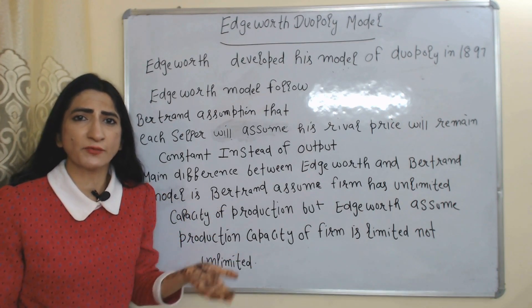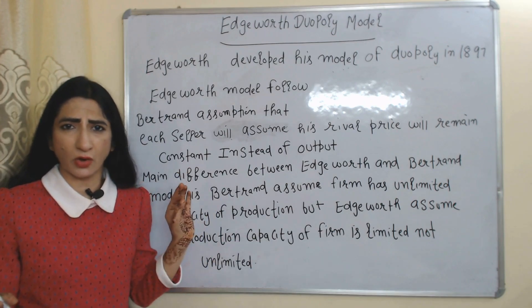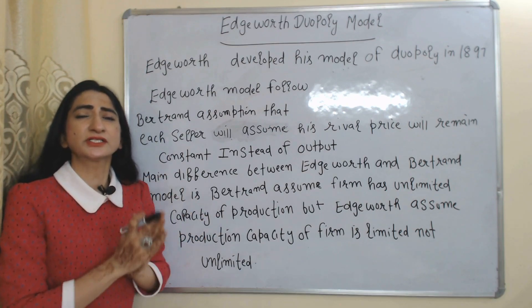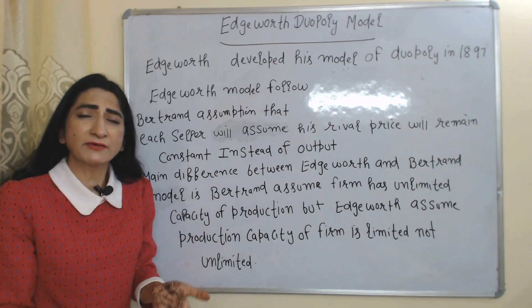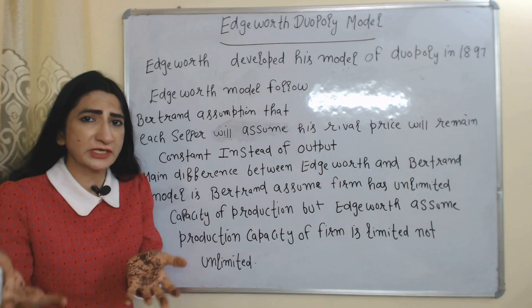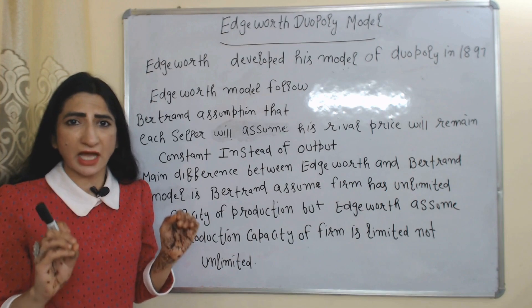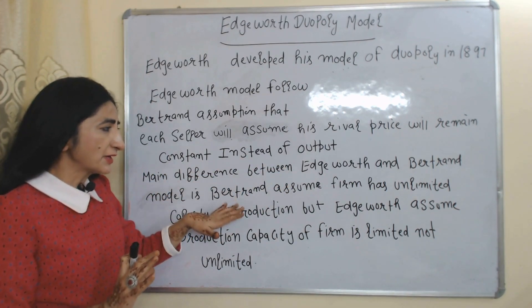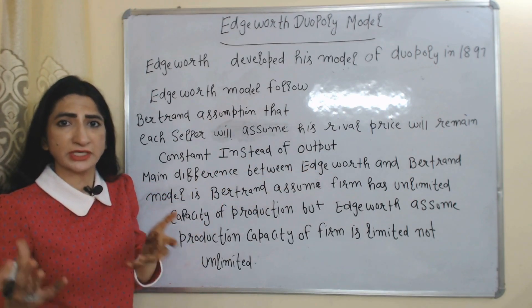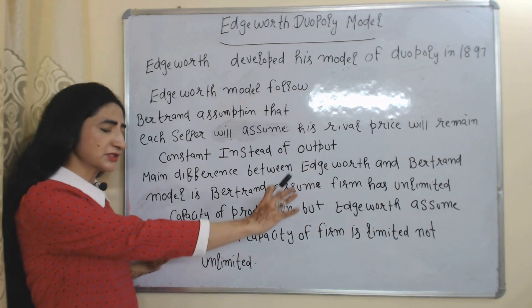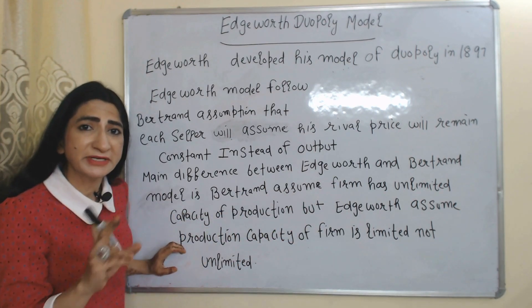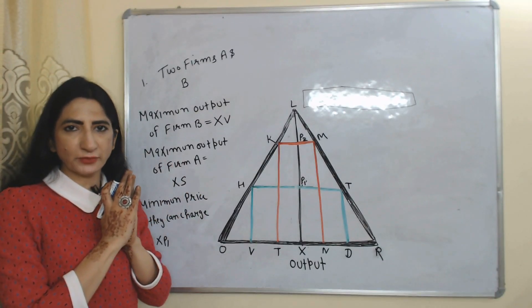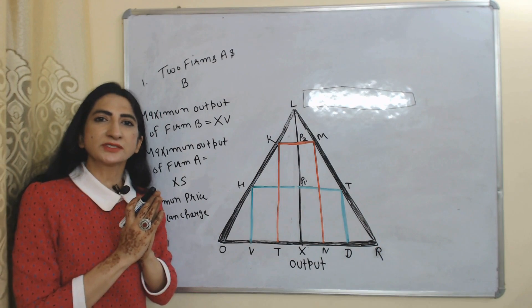Edgeworth follows the same assumption as the Bertrand model — each seller will assume the price of his rival firm will remain constant, rather than output. The main difference between Edgeworth and Bertrand model is that Bertrand assumes firms have unlimited production capacity, but Edgeworth assumes production capacity of a firm is limited, not unlimited.